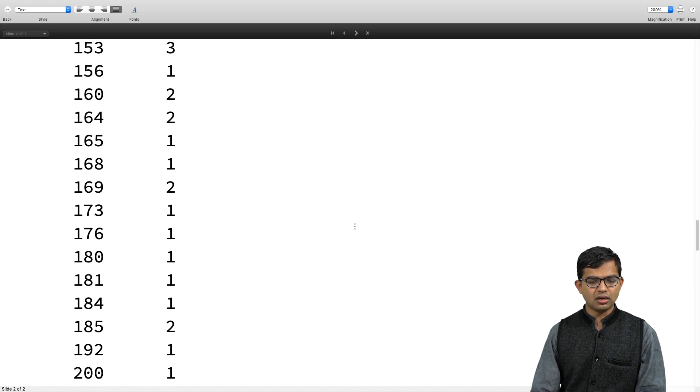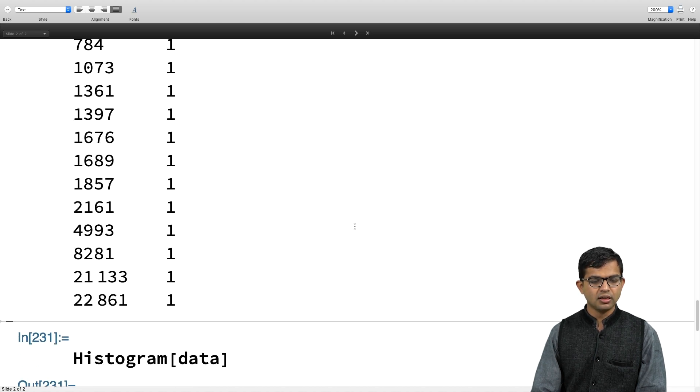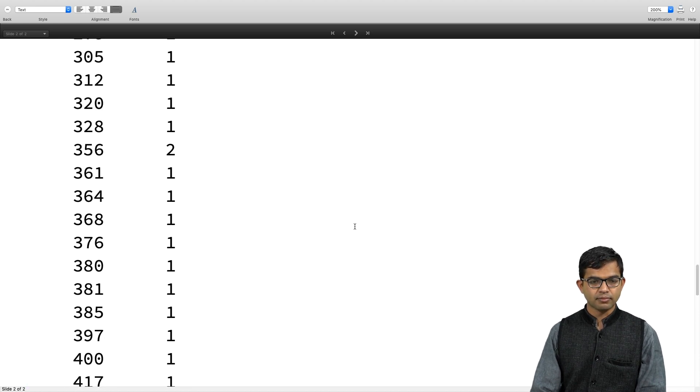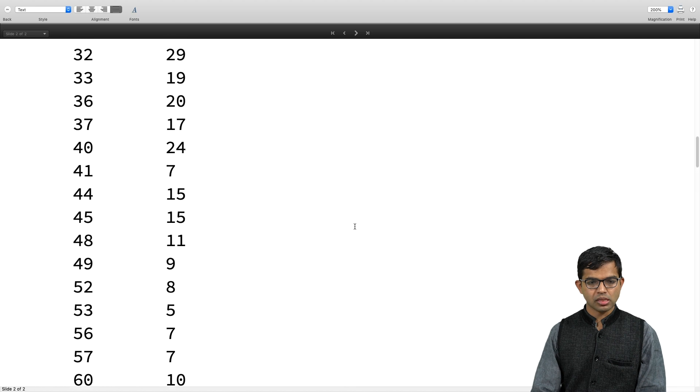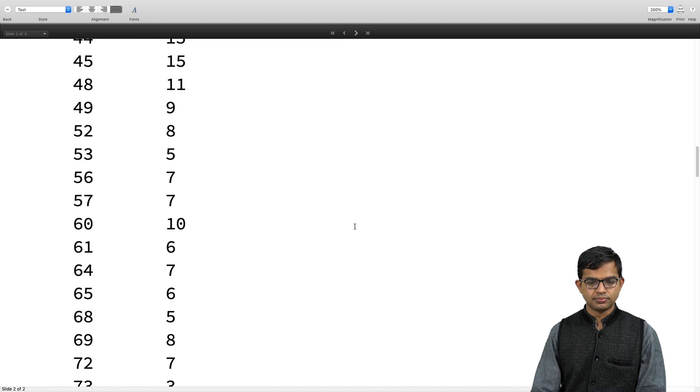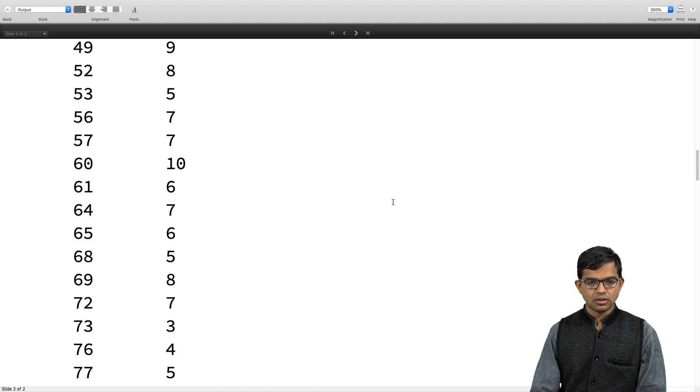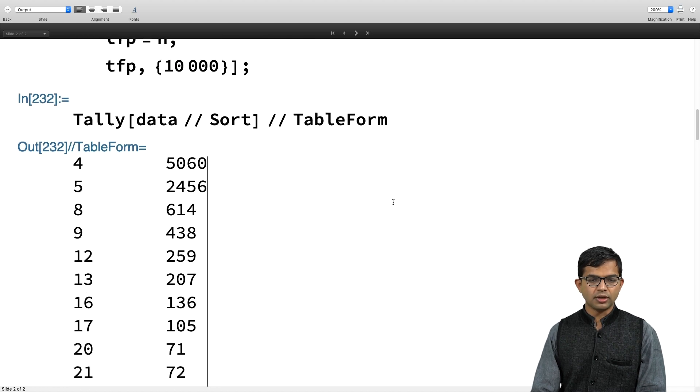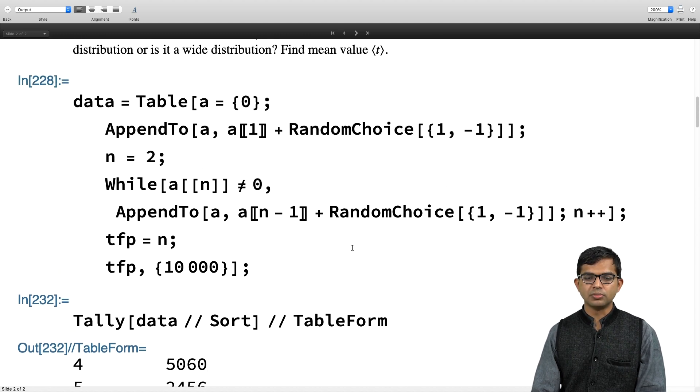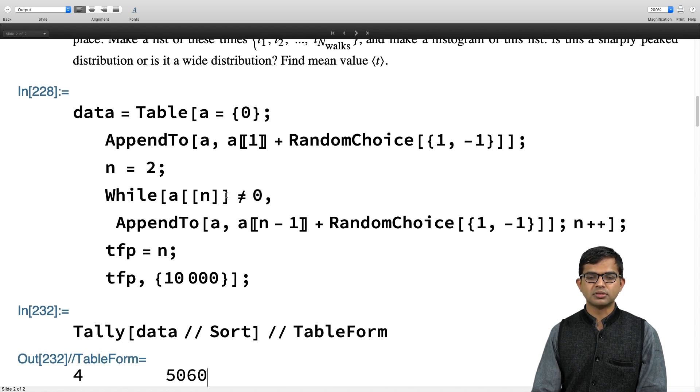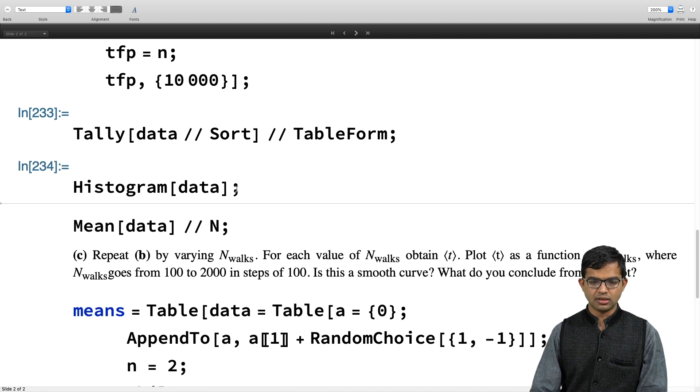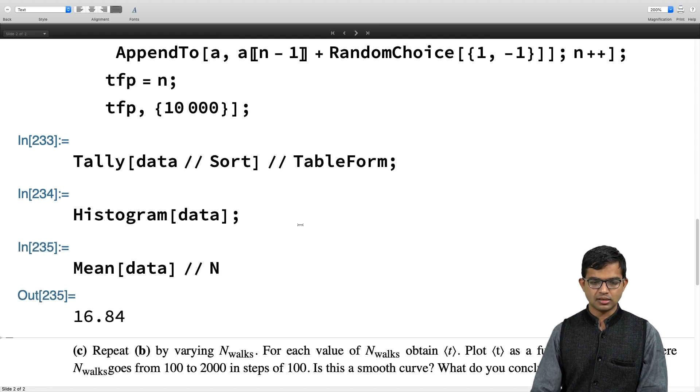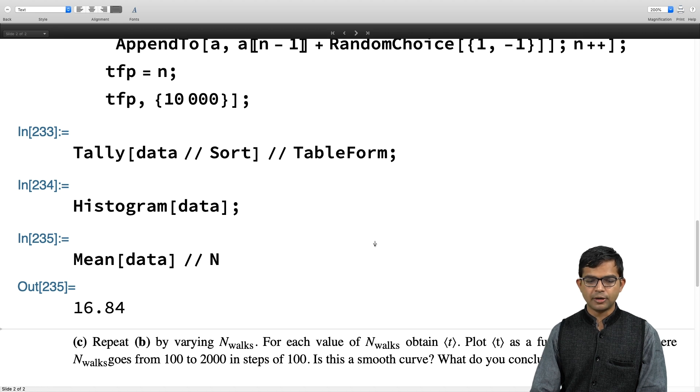That is also evident in this way of looking at the data. You see that some of these random walks actually run very, very, very long. There are 22,000, it has run for 22,000 steps before it has come back. I get 16.8 for the mean. So the third part of this is to repeat this whole thing and find out whether this set of means will itself converge or not.